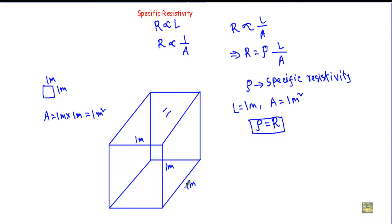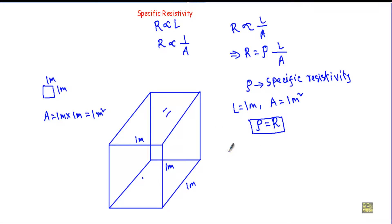This is one face of the cube and this is another face, with a length of 1 meter between them. For this cube, specific resistivity may be defined as the resistance between two opposite faces of a meter cube of the material. Now let's find the unit of specific resistivity.